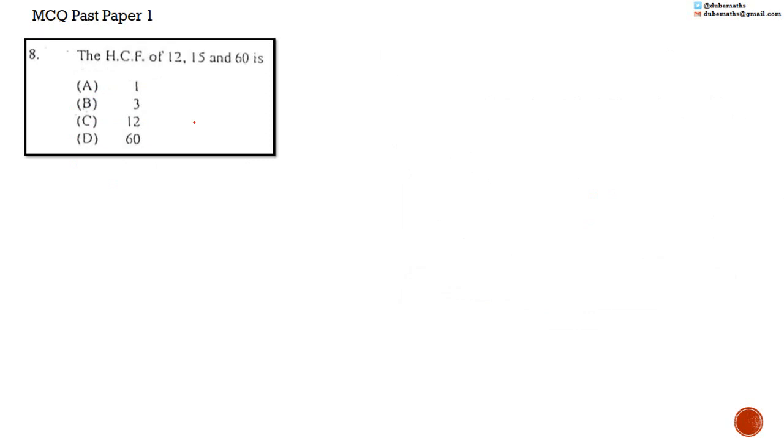Number 8. The HCF of 12, 15 and 60 is A, 1, B, 3, C, 12 or D, 60. The link to my video on HCF is in the description below. To determine the HCF, we list the factors and see which factors are common.